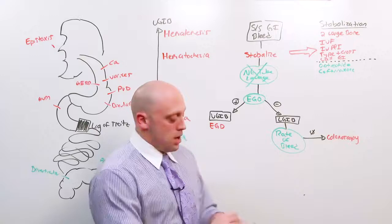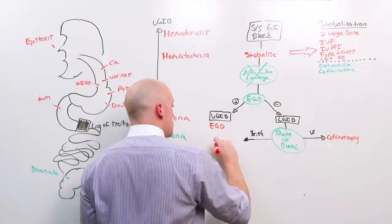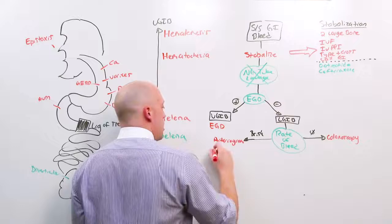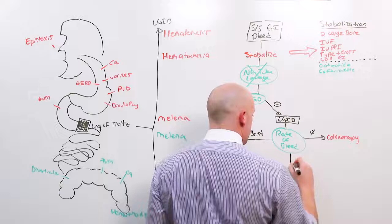If the bleeding is very brisk, and this is the person who's going to need constant transfusions, you're standing at the bedside giving blood product, this person needs an arteriogram. Because not only does the arteriogram allow you to visualize the bleed, it also allows you to embolize. That is, cut off the source of bleeding, both diagnostic and therapeutic. And then, if it's ongoing but not brisk, you can use a tagged red blood cell scan.